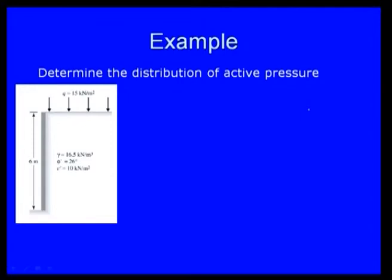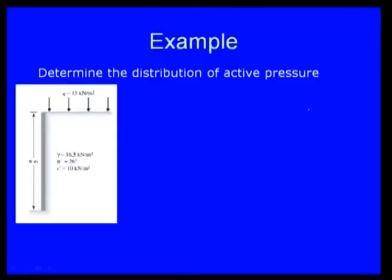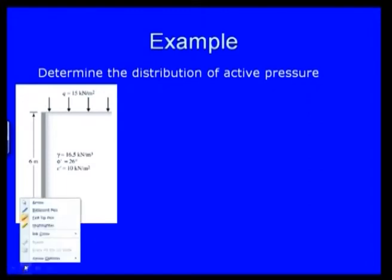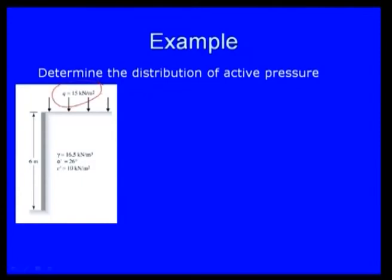Now a solved example: a retaining wall of height 6 meters has backfill with unit weight gamma equal to 16.5 kN/m³, phi prime equal to 26 degrees, c prime equal to 10 kN/m², and a surcharge q equal to 15 kN/m². The question is to determine the distribution of active earth pressure. The ground surface is plain, so alpha equals 0. This is a straightforward problem.